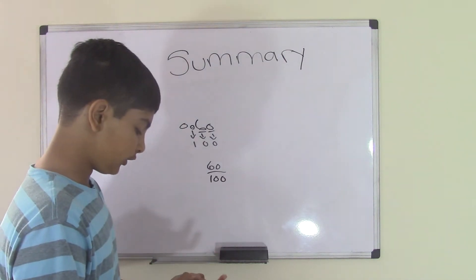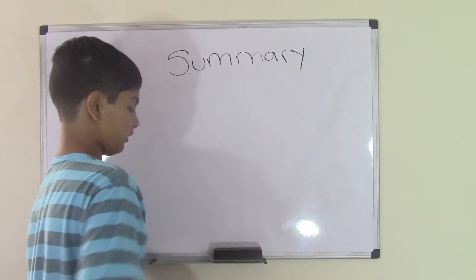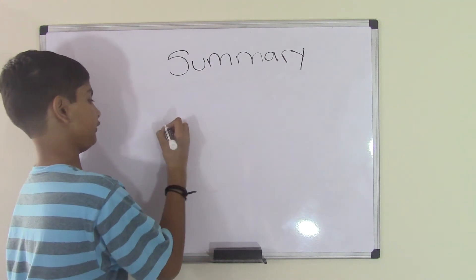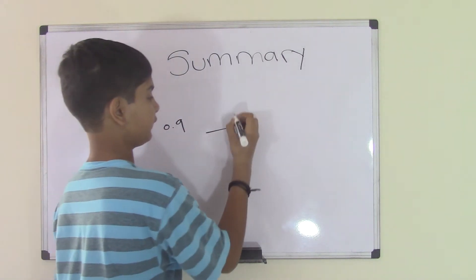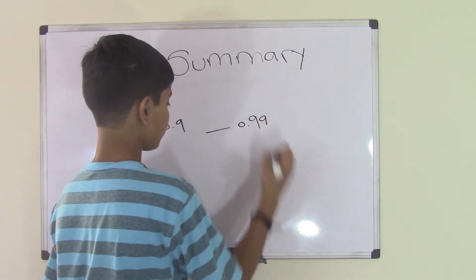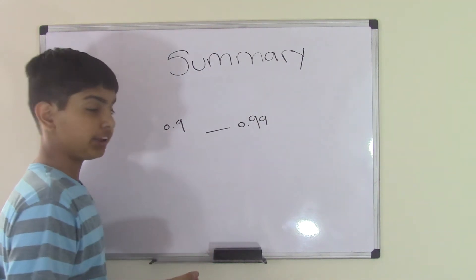Now let's go over comparing decimals. When we did the video, we said that we get problems such as 0.9 and we need to compare that with 0.99. To do this, we need to change each decimal number into a fraction.